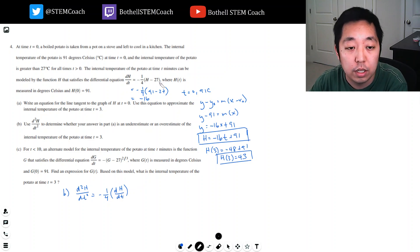At time t equals three, dh/dt is always negative because h is always bigger than 27 since it's cooling down, starting at 91. It's always bigger than 27, so this term is always positive. Times the negative one-fourth makes it negative. So this part is always negative times something, which makes the second derivative always positive.